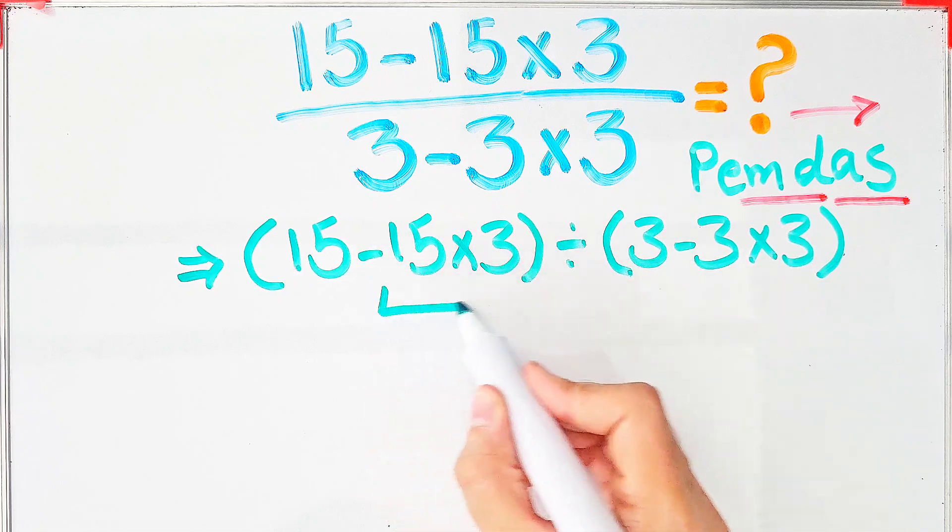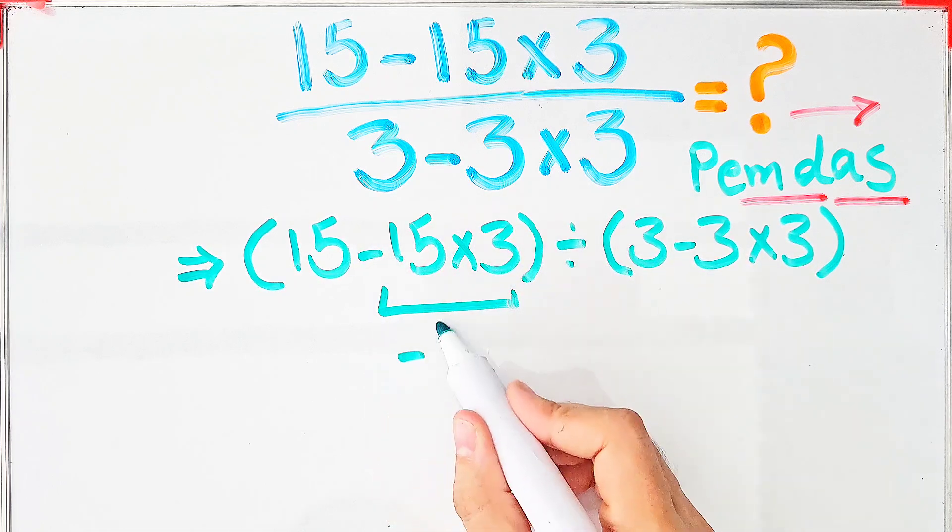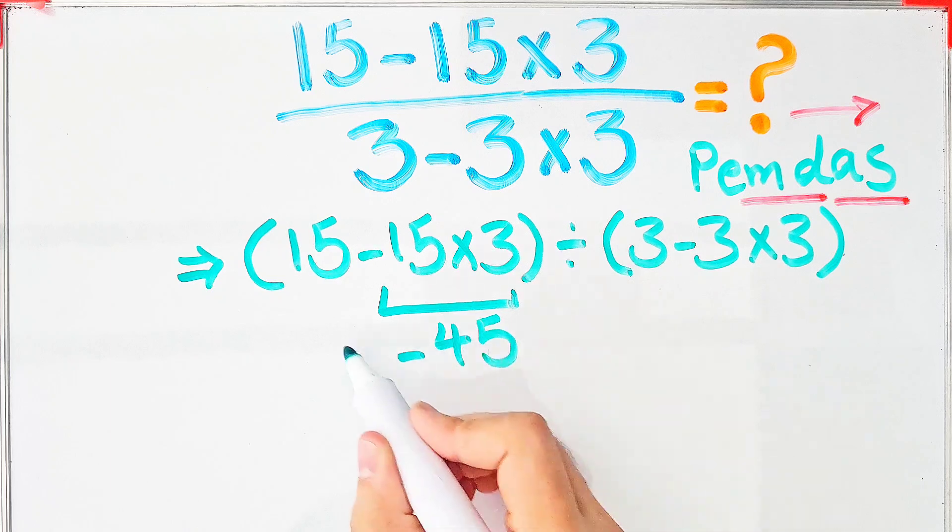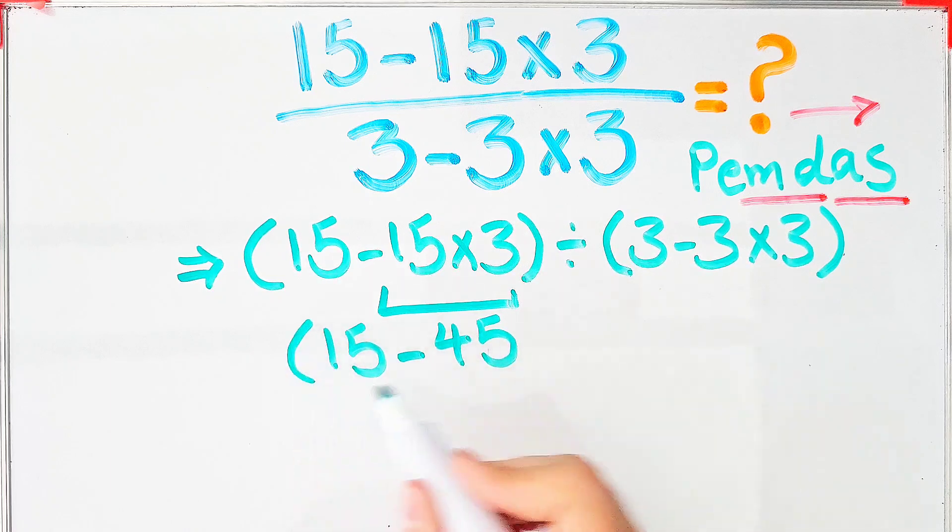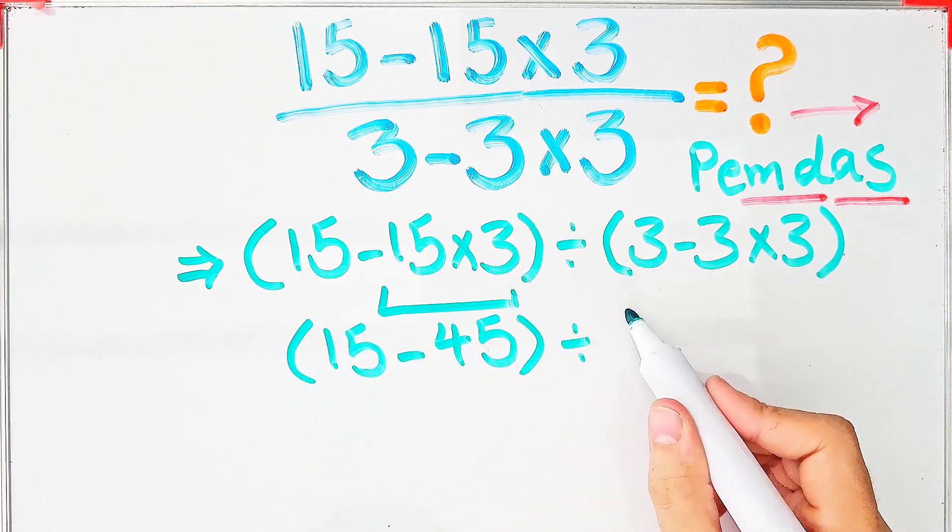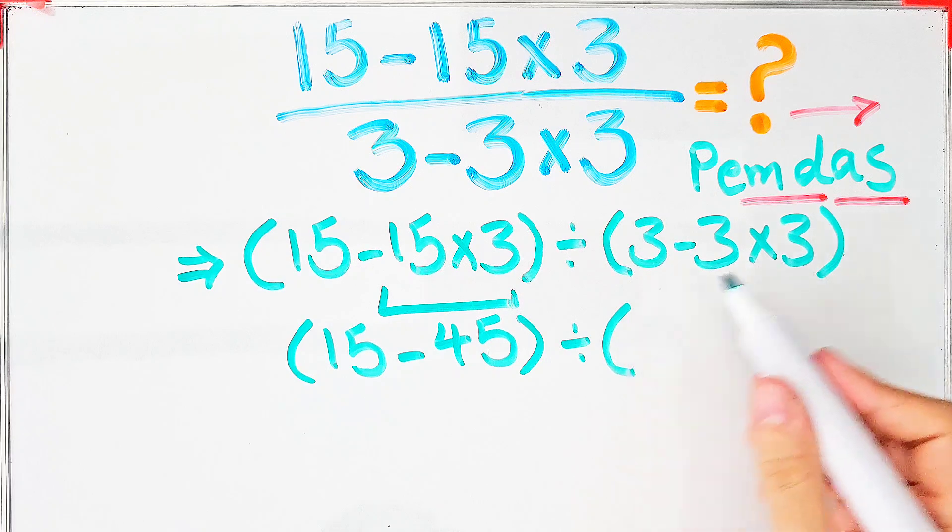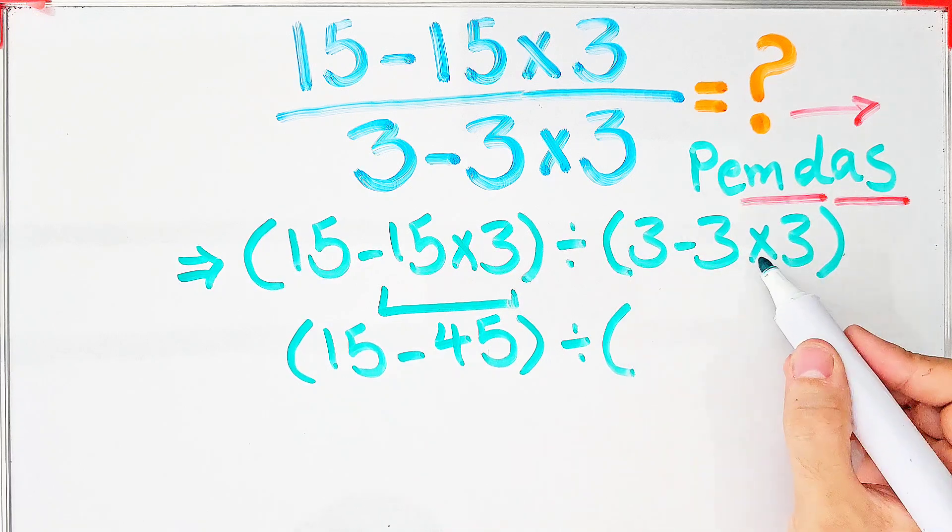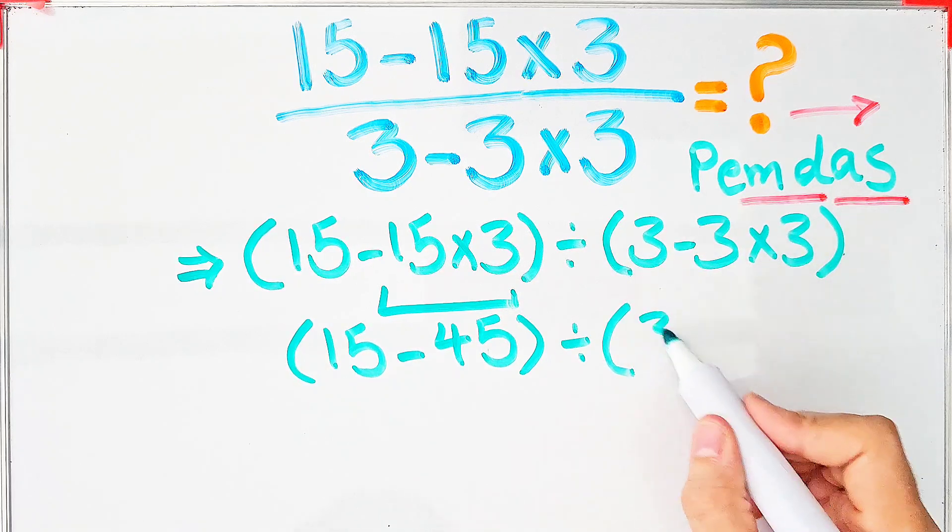First, we do this multiplication. 15 times 3 equals 45, so we have 15 minus 45, divided by 3 minus 3 times 3. Again, we do this multiplication. We have 3 minus 9.